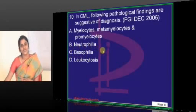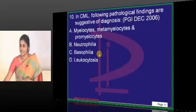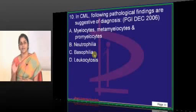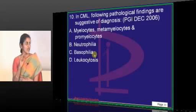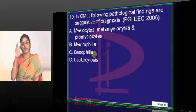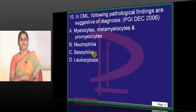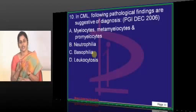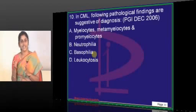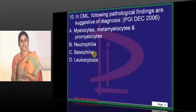Basophilia is also a feature of CML. We have very few causes of basophilia, and the classical prototypical example is chronic myeloid leukemia, which is prominent in the chronic phase. In the accelerated phase as well, one of the criteria for accelerated phase is basophilia.